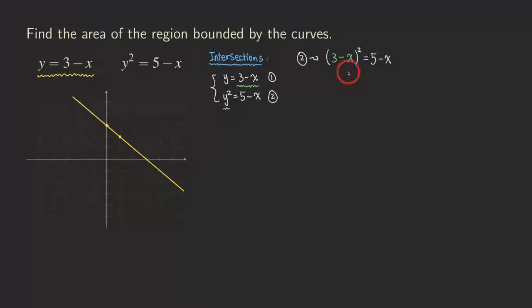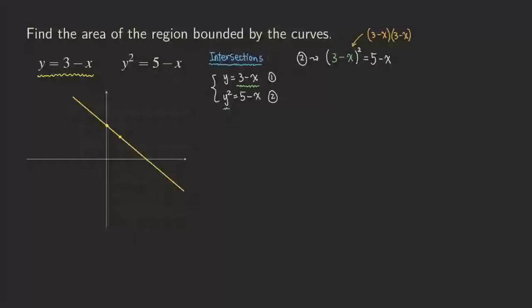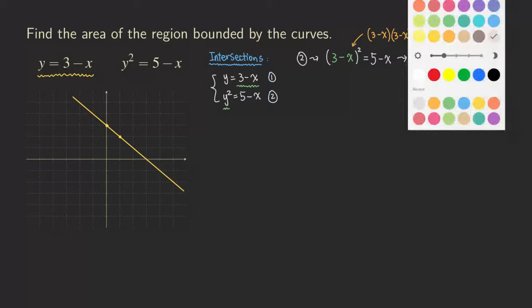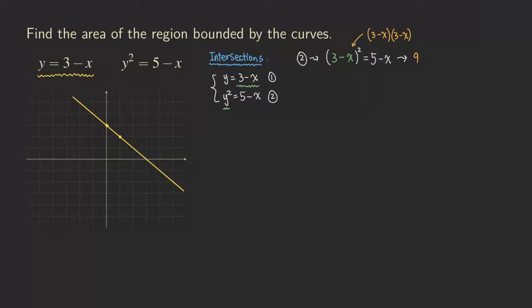Now equation two gives us something squared equals 5 minus x, and we replace y with 3 minus x to get a quadratic equation in x. We expand the square by writing it as two copies: (3 − x)(3 − x). We can FOIL or use the binomial square formula, giving us 9 minus 6x plus x squared.